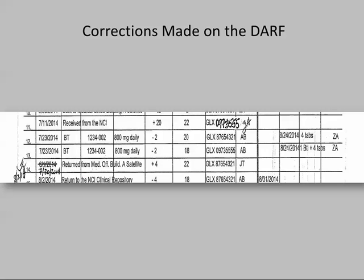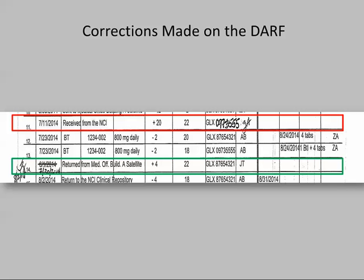Corrections made to any paper DARF must be neatly lined out, initialed, and dated — as shown in the example on line 14. Erasures or whiteouts are not acceptable, as shown in the example on line 11. Corrections made in any electronic accountability system also need to be appropriately documented.